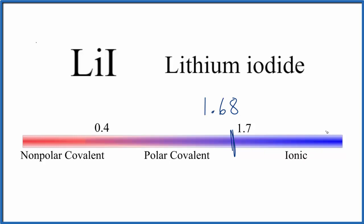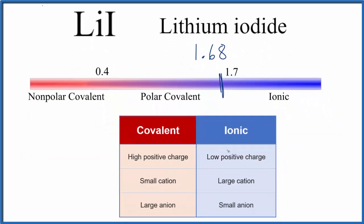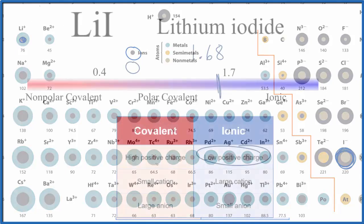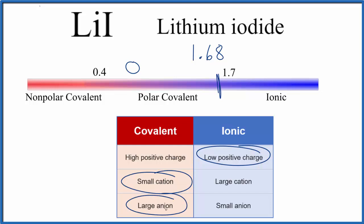We can use something called Fajans' rules to help us figure this out. The first question we ask is whether the ionic charge — the positive charge — is high. Well, lithium is in group one, that's one plus, so it's pretty low. What about the size of the lithium ion and the iodide ion? The dark color here represents the ion. Lithium is really small, and the iodide ion is pretty big. So we have a small cation and a large anion. That tells us that we'll have a covalent compound. Most of this information is pointing to a covalent compound — both the electronegativity and Fajans' rules.